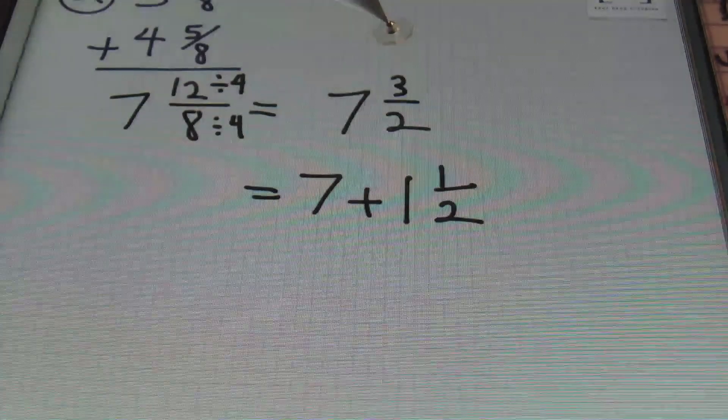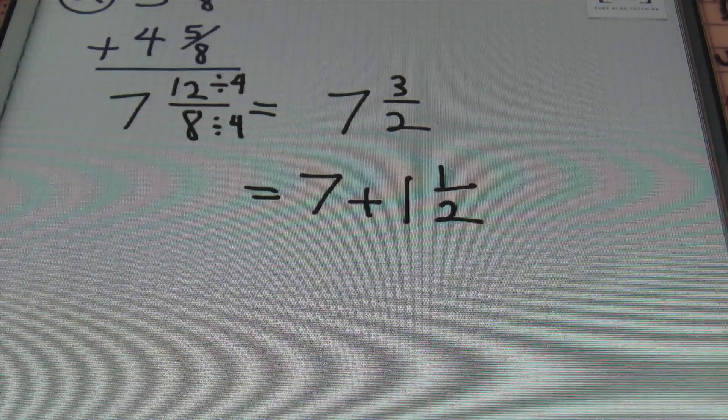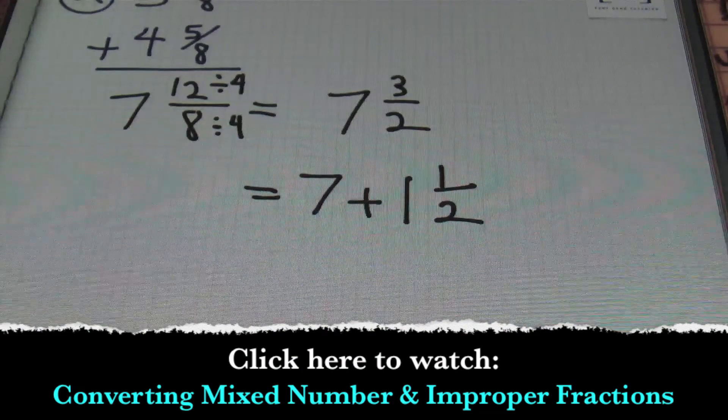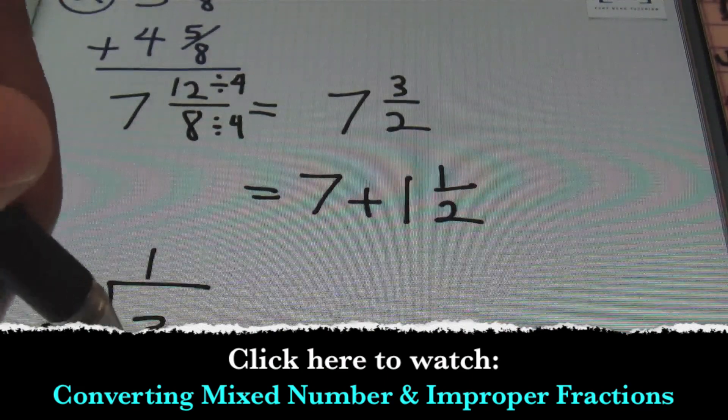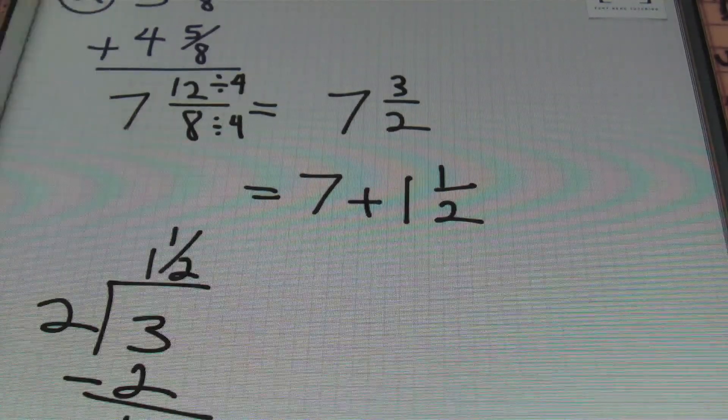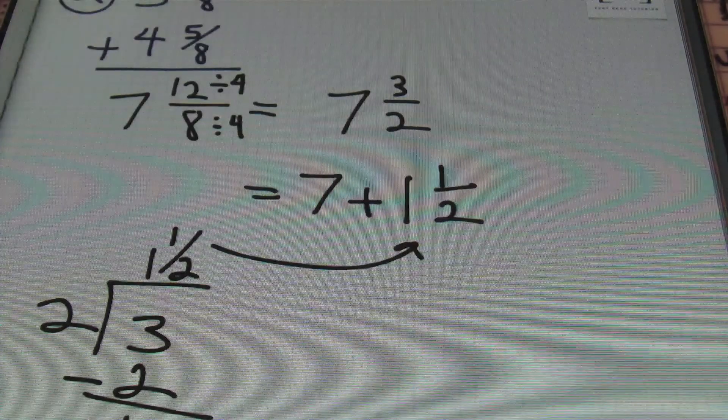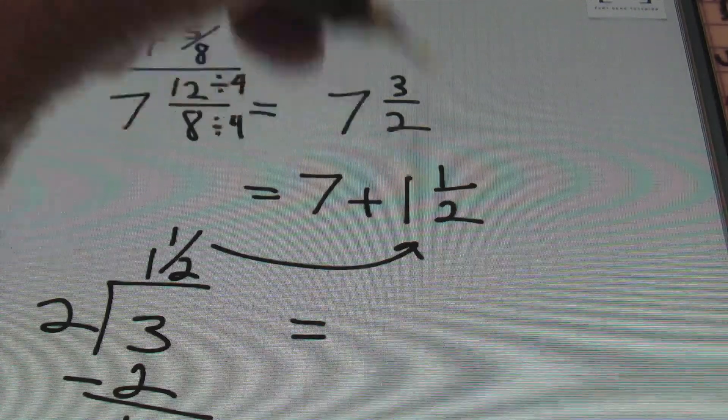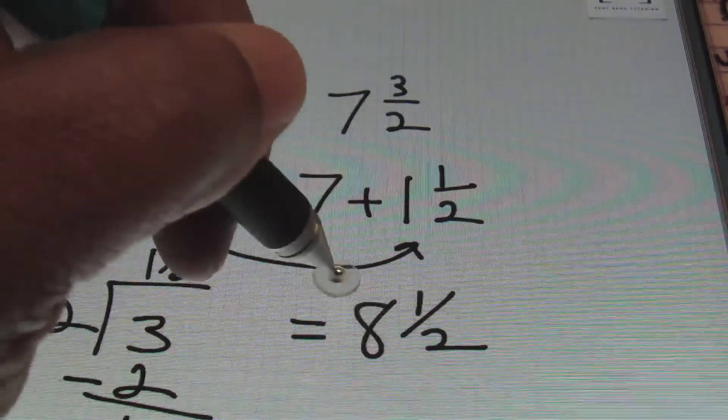Remember if you need to convert an improper fraction into a mixed number go ahead and check out our video converting mixed numbers and improper fractions. Bottom line ladies and gentlemen I just had 2 going into 3 one time. 1 times 2 is 2 and that left me with a remainder of 1 which goes in the numerator over the divisor of 2. And that's how I ended up with this value right here. That 1 and a half. From there you're going to add 7 plus 1 to give you a result of 8 and a half which is our answer to this problem.